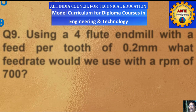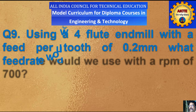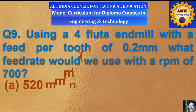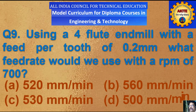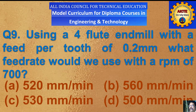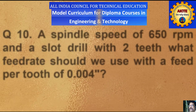Question number 9: using a 4-flute end mill with a feed per tooth of 0.2 mm, what feed rate would be used with a spindle speed of 700 rpm? A) 520 mm per minute, B) 560 mm per minute, C) 530 mm per minute, D) 500 mm per minute.